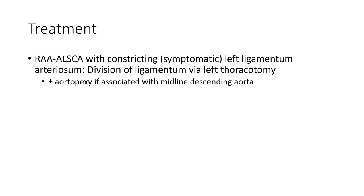Treatment of right aortic arch with aberrant left subclavian artery and constricting left ligamentum arteriosum includes division of the ligamentum via left thoracotomy, plus or minus resection of the diverticulum of Kommerell. This is the approach if associated with a complete vascular ring.